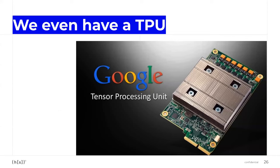Nowadays we even have TPUs — tensor processing units — which are dedicated processing units specifically for machine learning. TPUs were created around Google's machine learning framework TensorFlow, and they are optimized for the specific matrix multiplication operations that happen in machine learning, providing a solid speedup. Of course, to make use of that speedup, your model architecture needs to be constructed in a way that takes advantage of it.